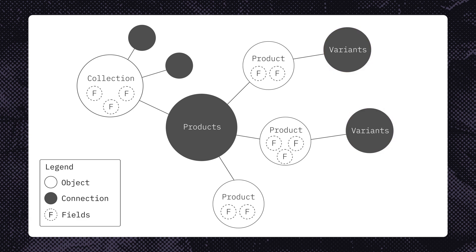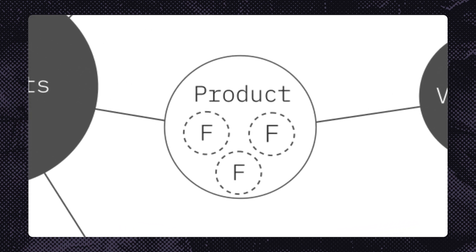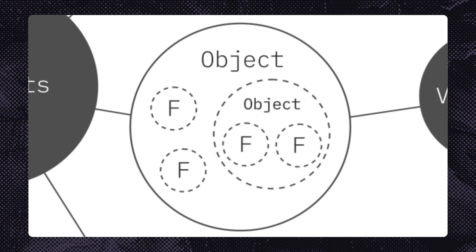The most basic unit you'll work with in GraphQL is called an object. For example, a product is an object. In its most basic form, GraphQL fetches fields on objects. A field can also be an object of its own, which contains more fields. Don't worry, we'll dive into this further later in the course.